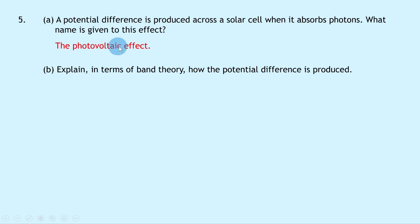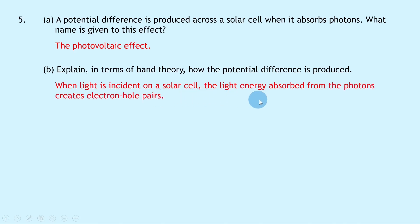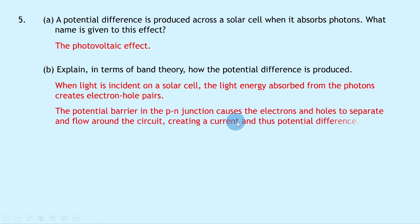Part B says to explain in terms of band theory how the potential difference is produced. Remember, when explaining something in terms of band theory, we need to use the terms valence band, conduction band, and electrons. When light is incident on a solar cell, the light energy absorbed from the photons creates electron-hole pairs. The potential barrier in the PN junction then causes the electrons and holes to separate and flow around the circuit, creating a current and thus a potential difference. A device can then be connected into that circuit to power it using this potential difference.